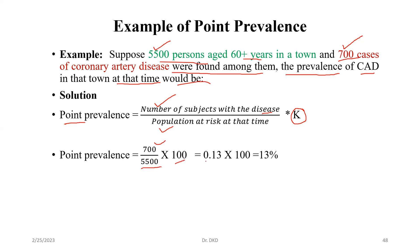We are multiplying by 100 because the decimal point value is 0.13. Once we multiply by 100, we get 13%, which is the point prevalence. That is why we are expressing the value in terms of percentage.